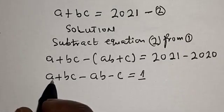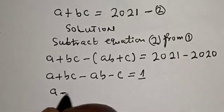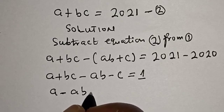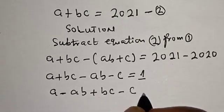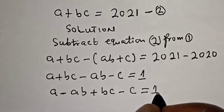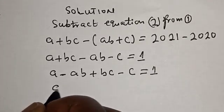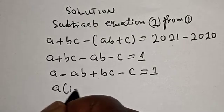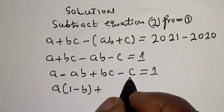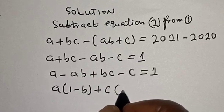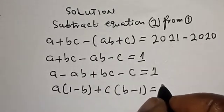Now we have A minus A, B plus B, C minus C is equal to 1. From here, A is common: A(1 minus B), and C is common: C(B minus 1) is equal to 1.